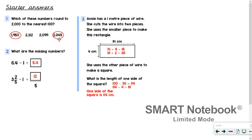So the two that rounded to two thousand to the nearest hundred were one thousand nine hundred and fifty, and two thousand and forty-five. Question two: what are the missing numbers? Six point four equals one add something — you could just take the one away from six point four, leaving five point four. So one add five point four equals six point four. Then three and two fifths equals one add something. It wasn't asking for a mixed number, so it wanted the improper fraction. Take the one off: two and two fifths. Two wholes is ten fifths, add the two on top — that's twelve fifths.